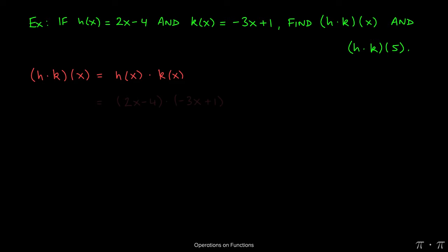If we plug in the two functions we have, we get (2x - 4)(-3x + 1) equaling -6x² + 2x + 12x - 4. This came from simply foiling or distribution term by term.